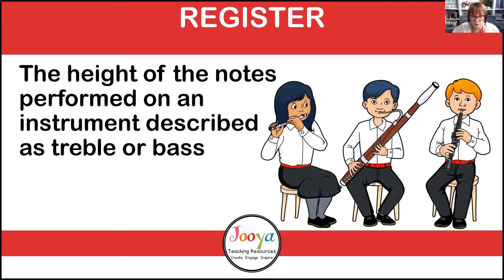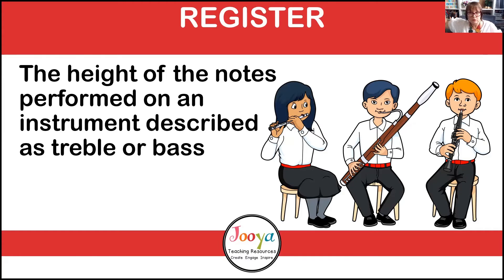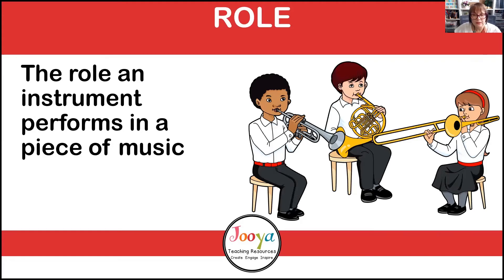Register refers to the height of the notes performed by an instrument - treble or bass. Sitting at the piano, middle C: anything to the right is in the treble, anything to the left is in the bass - just think high or low. You've also got upper treble, mid treble, low treble, upper bass, mid bass, and low bass. Know your instruments so you know what register they play in - the piccolo, for example, is not going to be playing in the bass register. The role an instrument performs might be the melody, the beat, a bass line, rhythmic accompaniment, or melodic accompaniment, and the role might change between instruments.